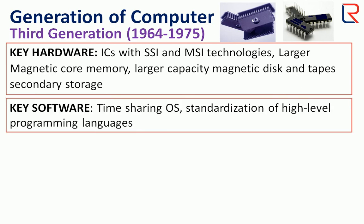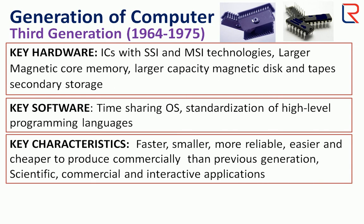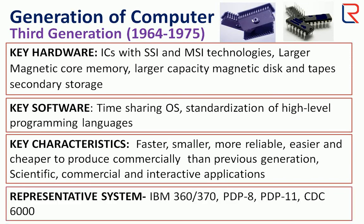Key software includes time sharing operating system and standardization of high level programming languages. The characteristics are faster, smaller, more reliable, easier, and cheaper to produce commercially than the previous generation, supporting scientific, commercial, and interactive applications. The representative systems are IBM 360, IBM 370, PDP-8, PDP-11, and CDC 6000.